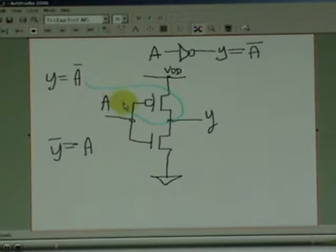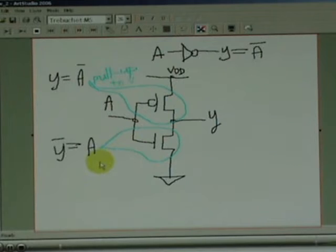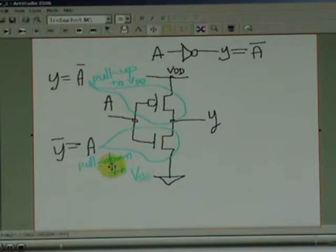This is the pull-up network. This is the pull-down. So this is the required PMOS transistor and an NMOS transistor. The gate is interconnected to the input, and the junction of the PMOS and NMOS is the output.